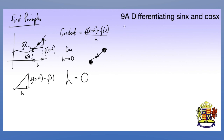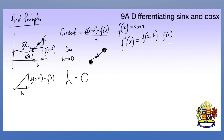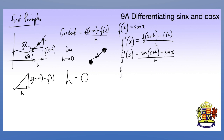So if f of x is sine x and we want to find f dash x, we differentiate using first principles: f of x plus h minus f of x, all over h. Substituting gives us sine of x plus h minus sine x, all over h. Now sine of x plus h expands using the addition rule to give sine x cos h plus sine h cos x.